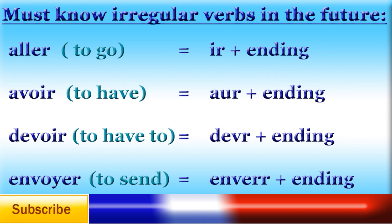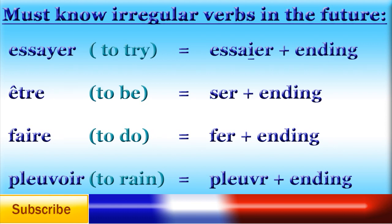The next few verbs have completely irregular stems, so I'd advise you to learn them off by heart. The stem for aller in the future is ir-, for avoir it is aur-, for devoir it is devr-, for envoyer it is enverr-, for essayer it is essaier-, for être it is ser-, and for faire it is fer-. For pleuvoir, the stem is pleuvr-.